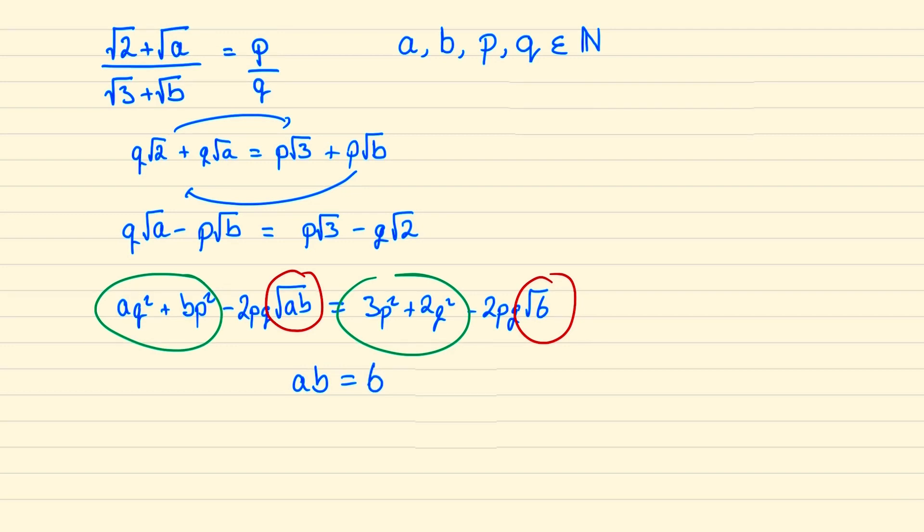And so this gives us four possibilities to check. Namely 6 times 1, a is 3 b is 2, a is 2 b is 3, and finally a is 1 and b is 6.